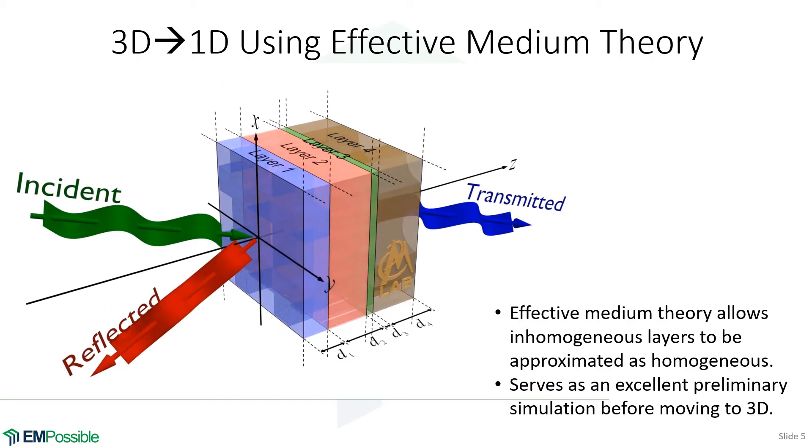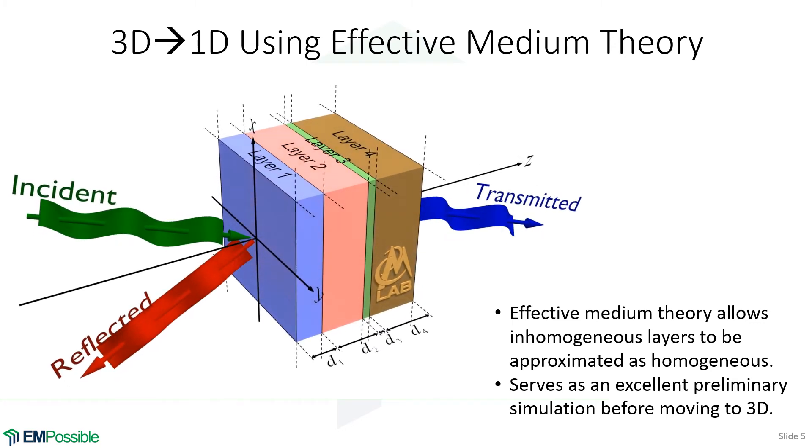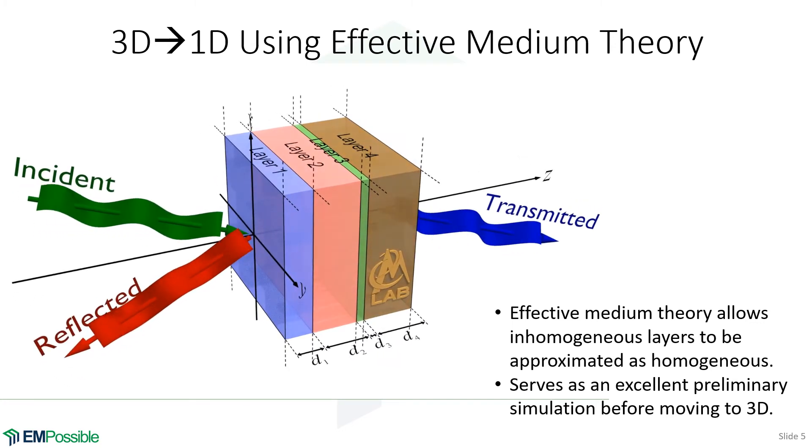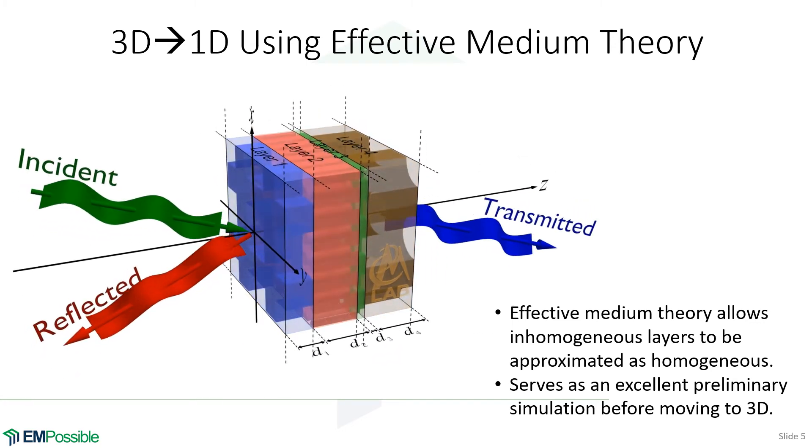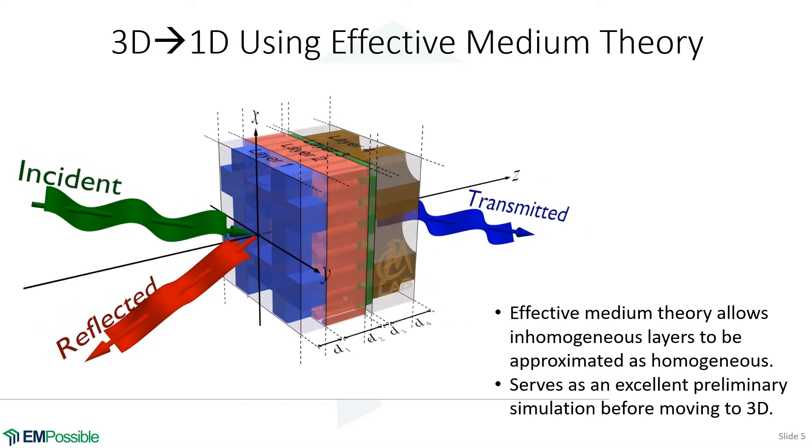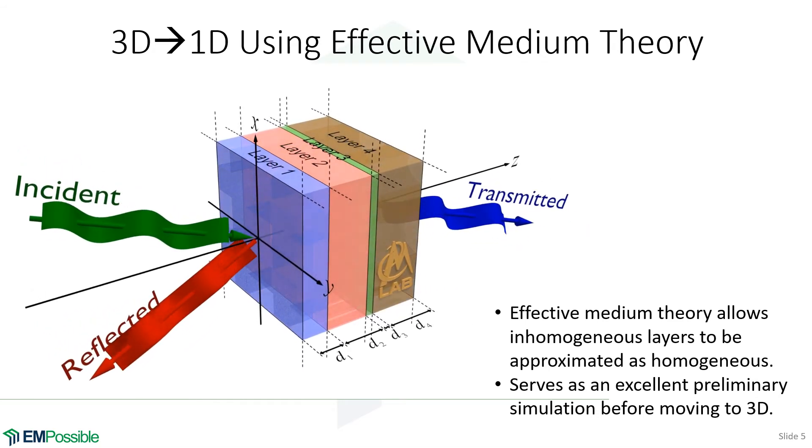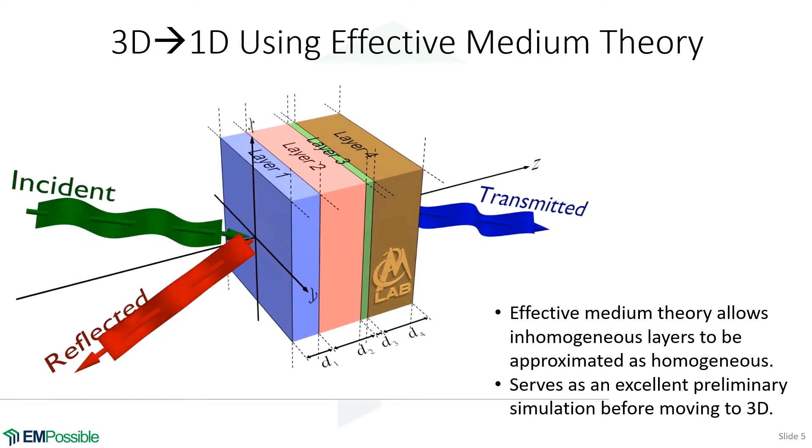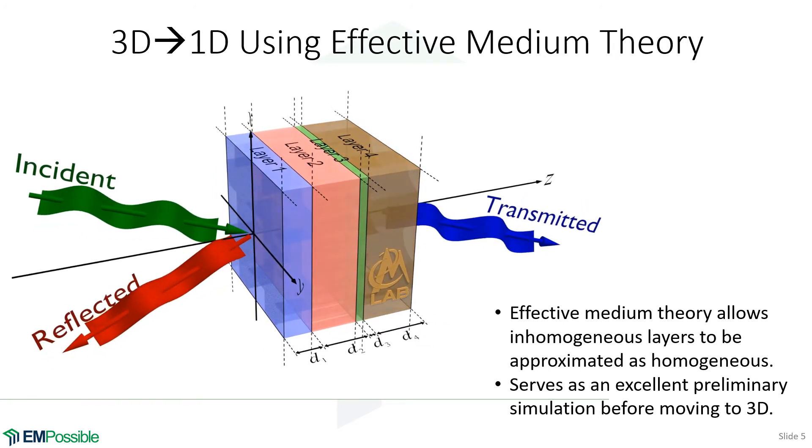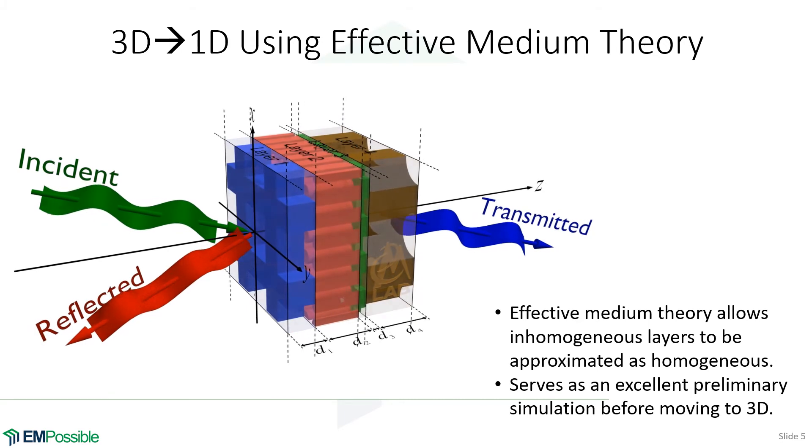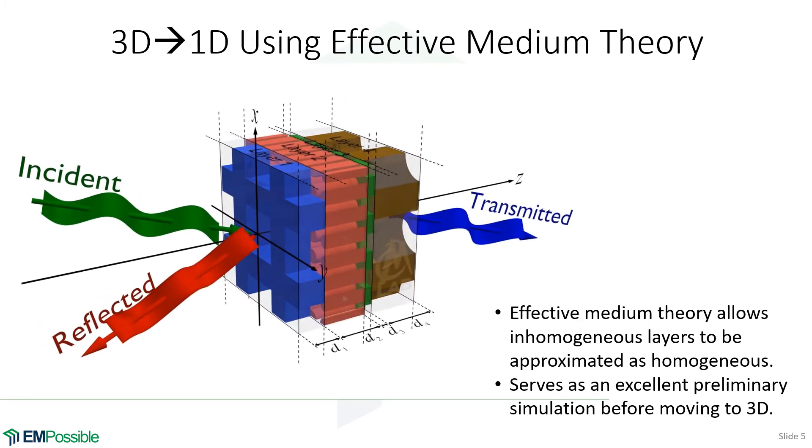Now we're looking at a rather complicated device. It actually has structure in the x and y directions, which you're seeing right now. If those structures is much less than a wavelength, it turns out the wave will see essentially just an average of the material properties in each of those layers.